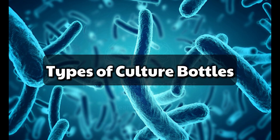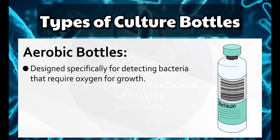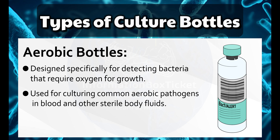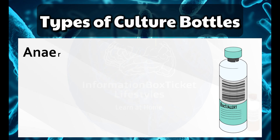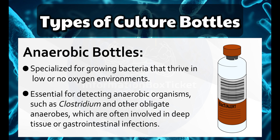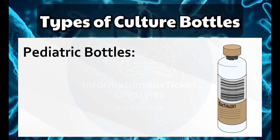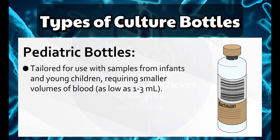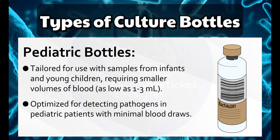Types of Culture Bottles. Aerobic Bottles: Designed specifically for detecting bacteria that require oxygen for growth, used for culturing common aerobic pathogens in blood and other sterile body fluids. Anaerobic Bottles: Specialized for growing bacteria that thrive in low or no oxygen environments, essential for detecting obligate anaerobes such as Clostridium, often involved in deep tissue or gastrointestinal infections. Pediatric Bottles: Tailored for use with samples from infants and young children, requiring smaller volumes of blood as low as 1–3 mL, optimized for detecting pathogens in pediatric patients with minimal blood draws.